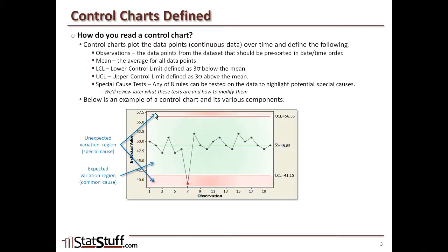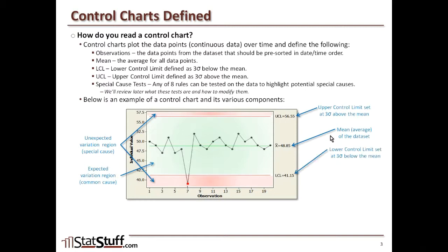Other elements include the mean, highlighted in green in the control chart, as well as the upper control limit — three standard deviations above the mean — and the lower control limit, three standard deviations below the mean.